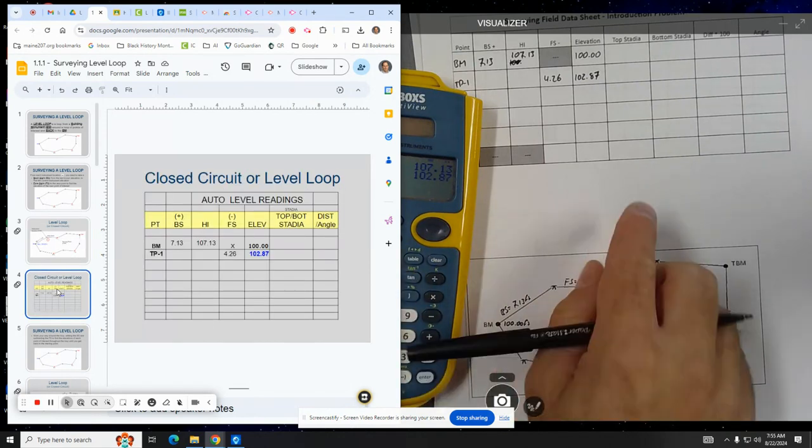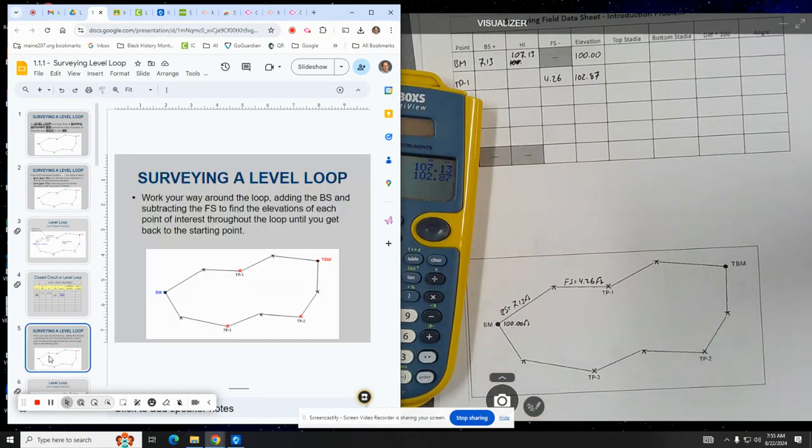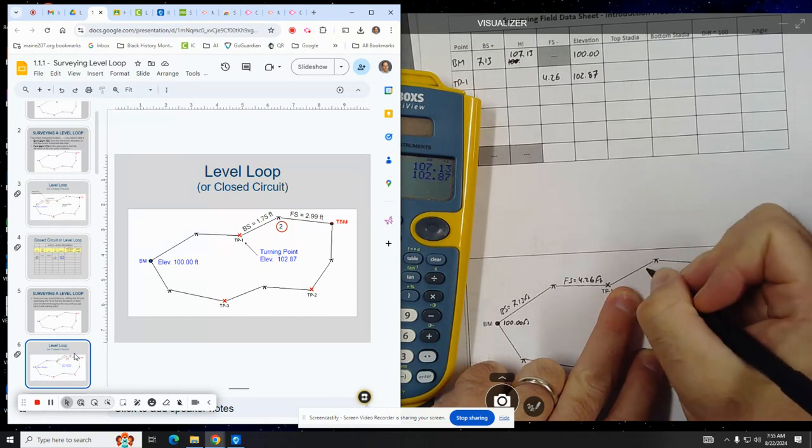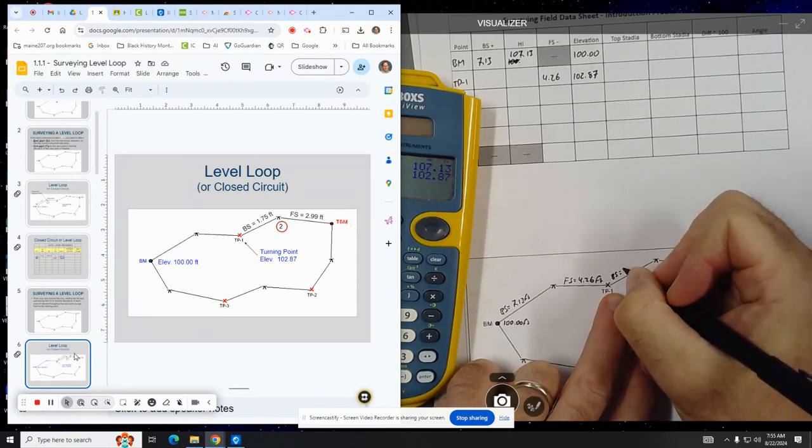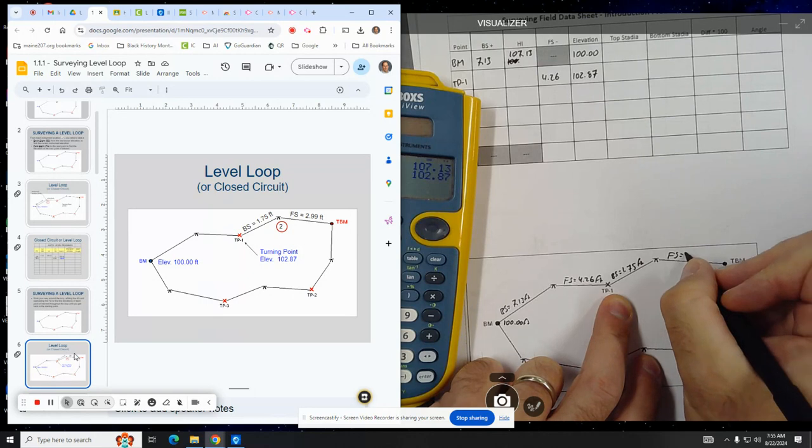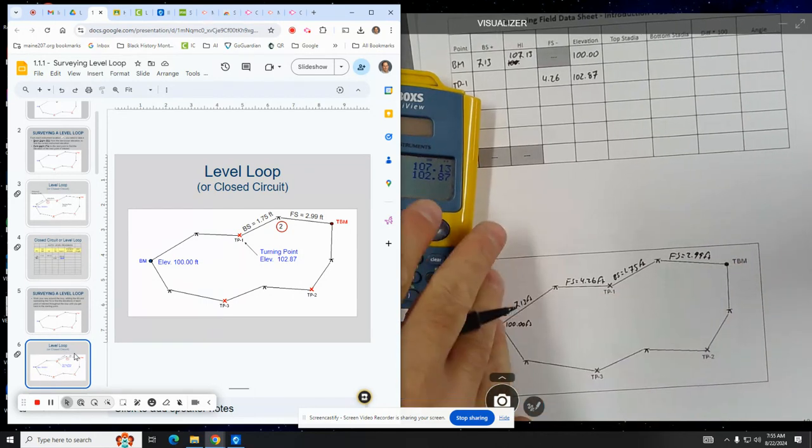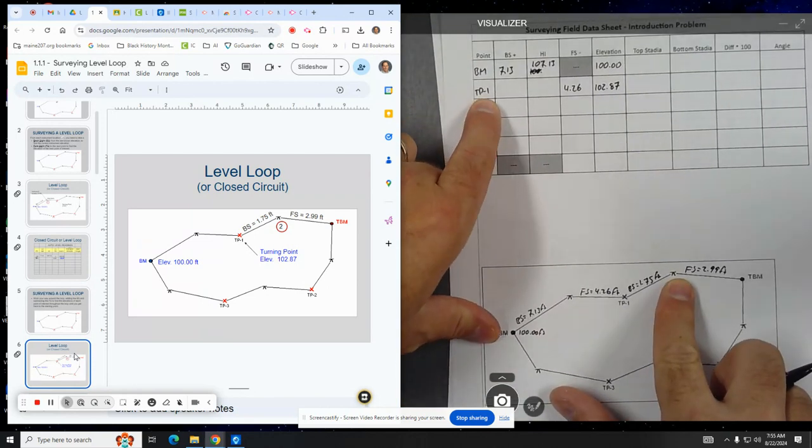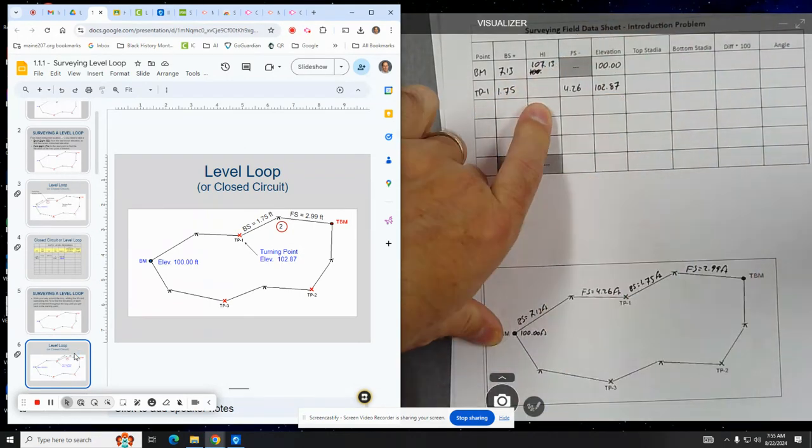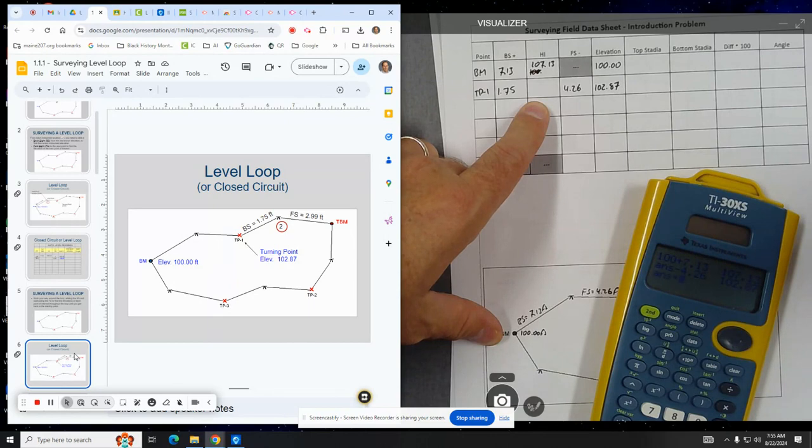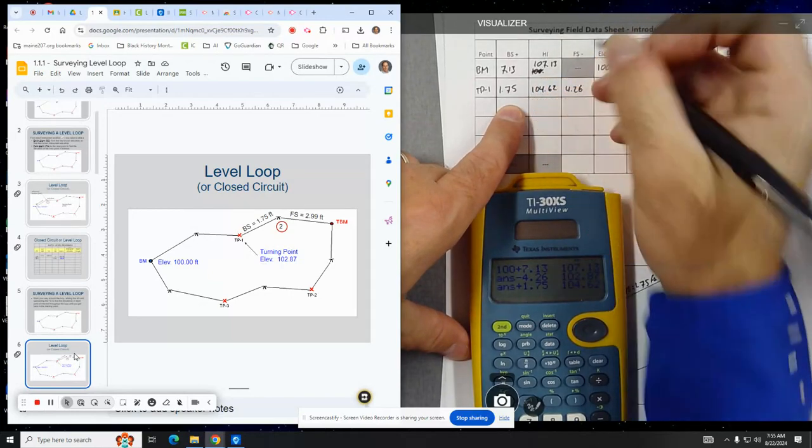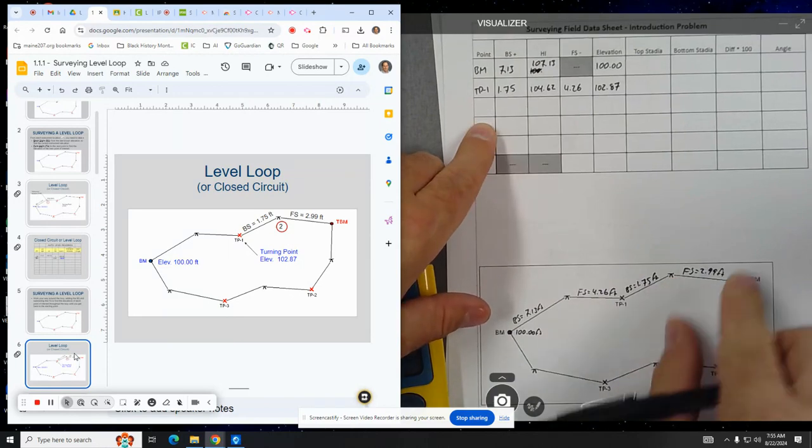And then this explains these calculations again. And then we go to the next one. And again, from this new station, this new location where we put the instrument, our back sight is 1.75 feet and our foresight is 2.99 feet. So the back sight back to TP1 is 1.75. So you take 102.87, you add that. So just hit the plus sign, add 1.75. So it's 104.62 is the height of the instrument at this location.